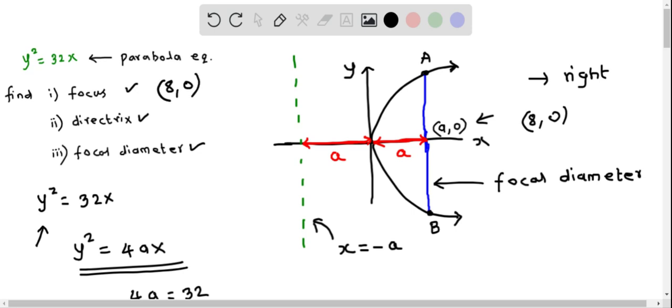Now let's find the directrix. The line which I have shown in dotted green line is the directrix. Directrix is basically a line which is at a distance of a units to the left of the vertex of the parabola.